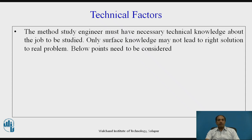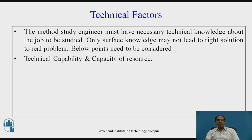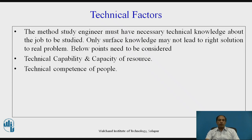The next important factor is technical factors. The method study analyst must have necessary technical knowledge about the job to be studied — only surface knowledge may not lead to the right solution. One consideration is technical capacity and capacity of a resource. For example, if a machine has a capability of 10 microns and we try a job requiring 5 microns capability, the major study may not help and the entire exercise may go to waste. Also, if during trial the capacity of the resource is not sufficient for the job, we may fail in the major study before reaching final conclusions.